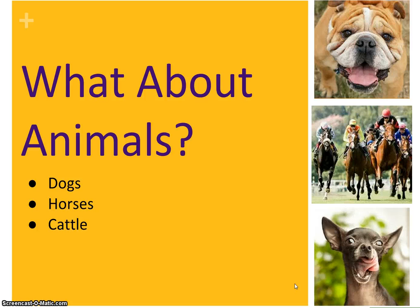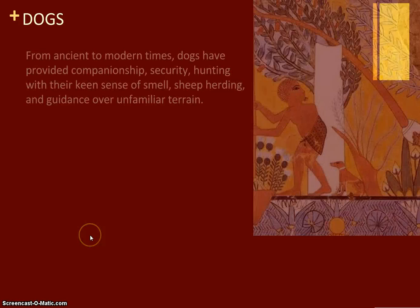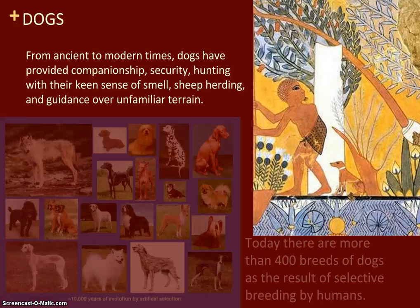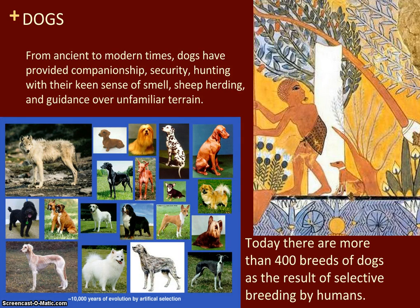What about animals? We're going to give you a couple of different examples — dogs, horses, and then cattle. From ancient to modern times, dogs have provided companionship, security, hunting with their keen sense of smell, sheep herding, and guidance over unfamiliar terrain. Today there are more than 400 breeds of dogs as a result of selective breeding by humans.